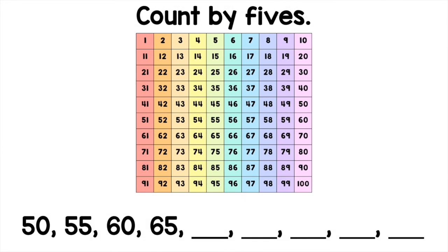On the bottom of the screen, I have the numbers 50, 55, 60, and 65. Let's find those numbers on the 100 chart: 50, 55, 60, and 65. To find the next 5 numbers, we continue counting on by 5s.